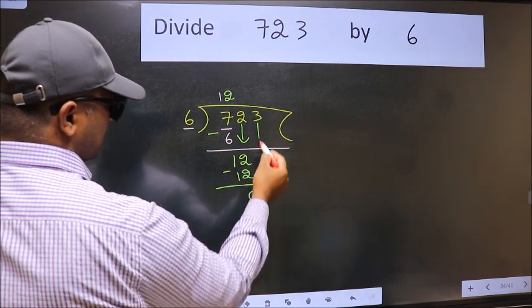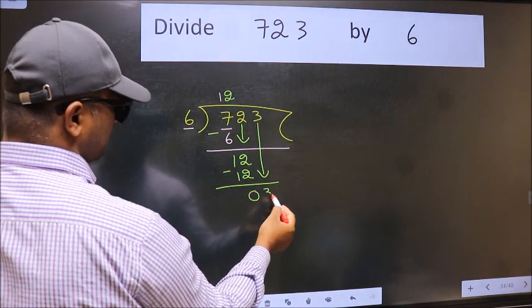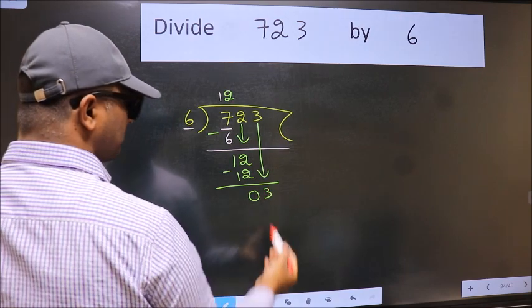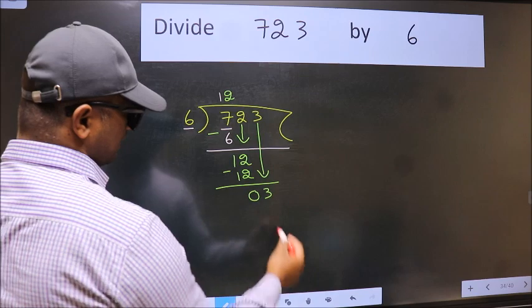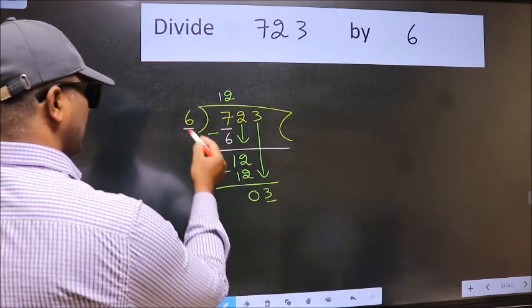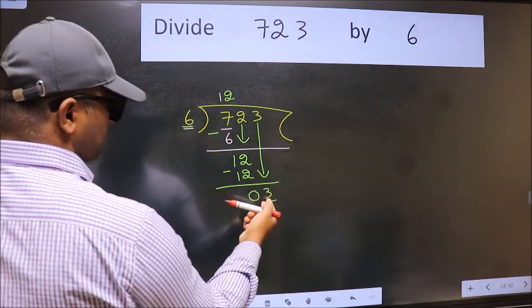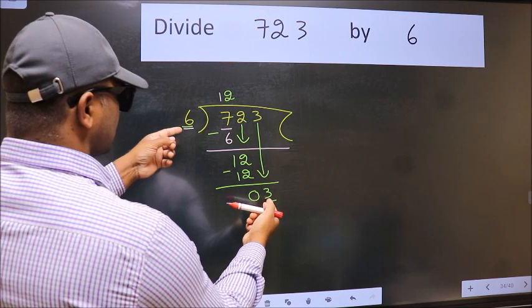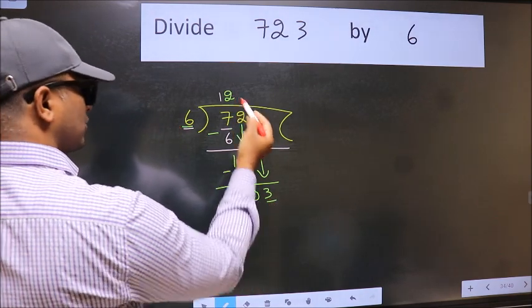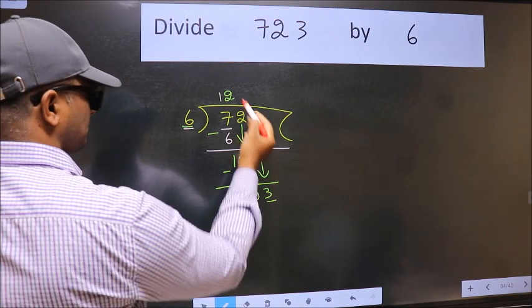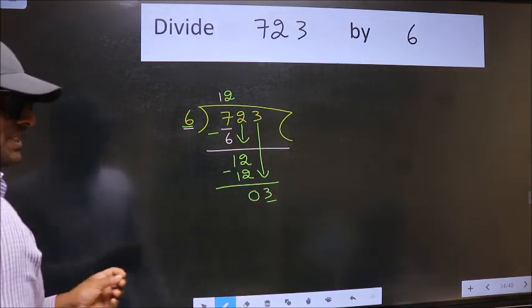After this, bring down the beside number. So 3 down. After this step, the mistake happens. And the mistake is this: here we have 3 and here 6. 3 is smaller than 6. So what many do is they directly put 0, which is wrong.